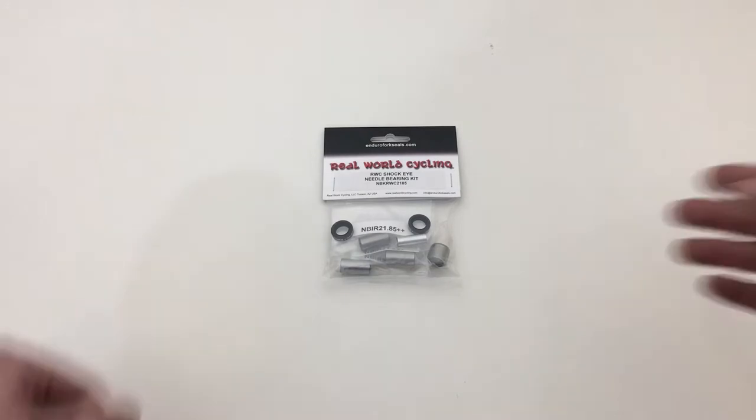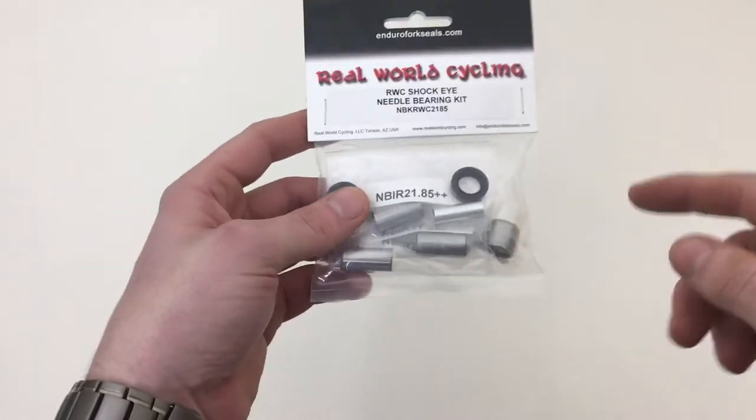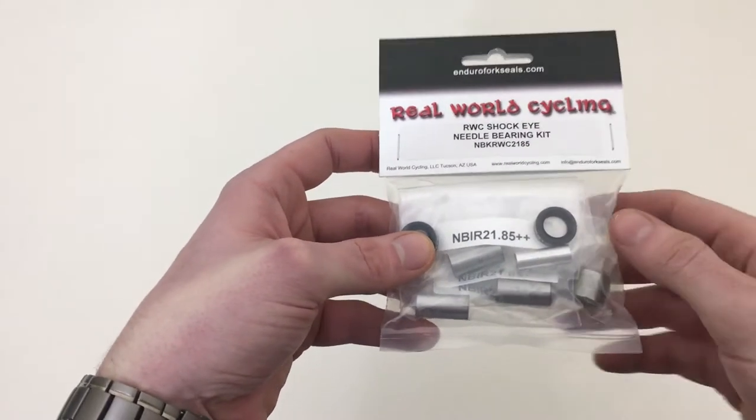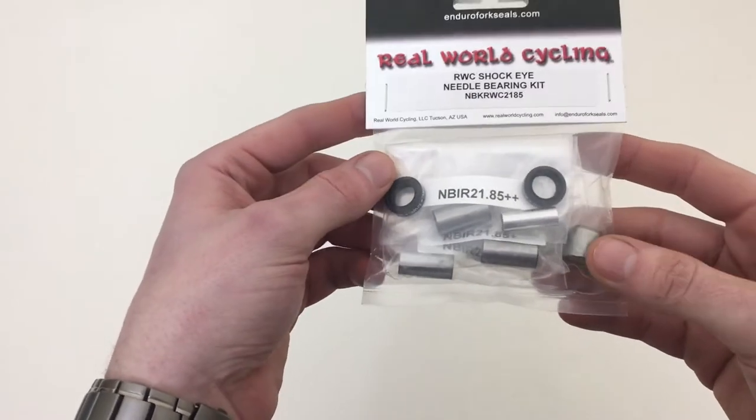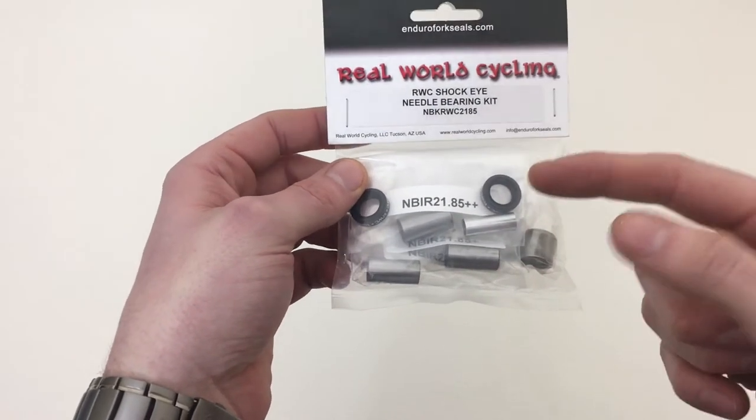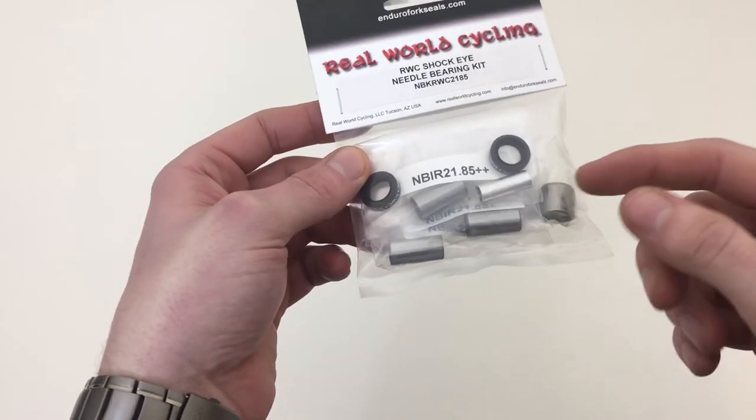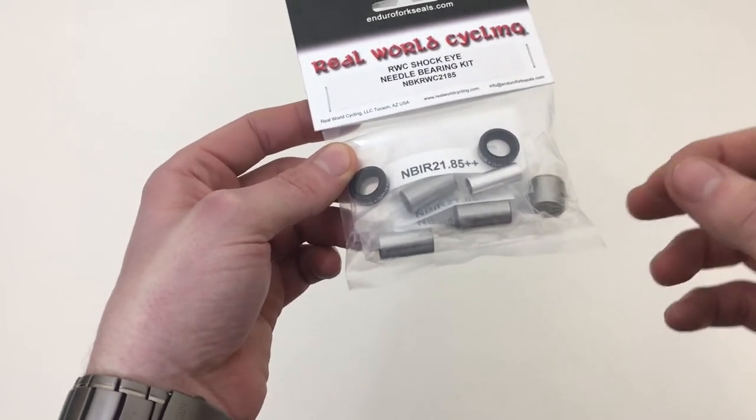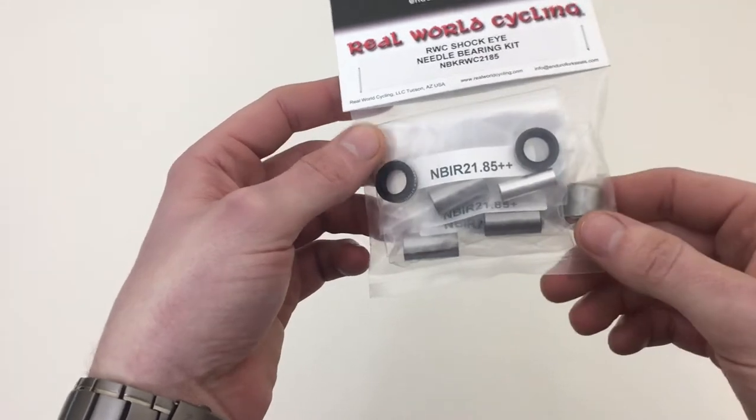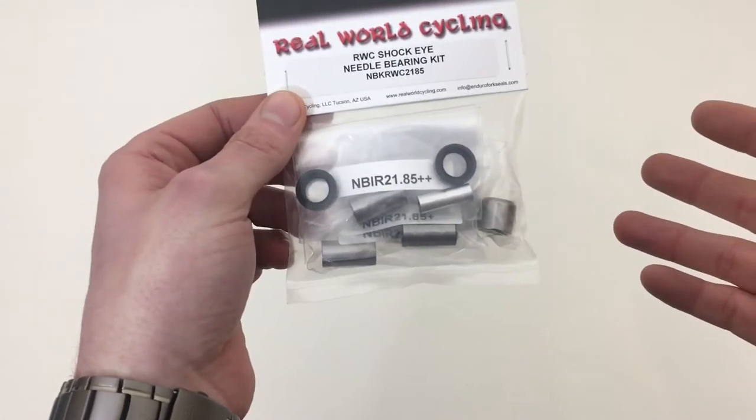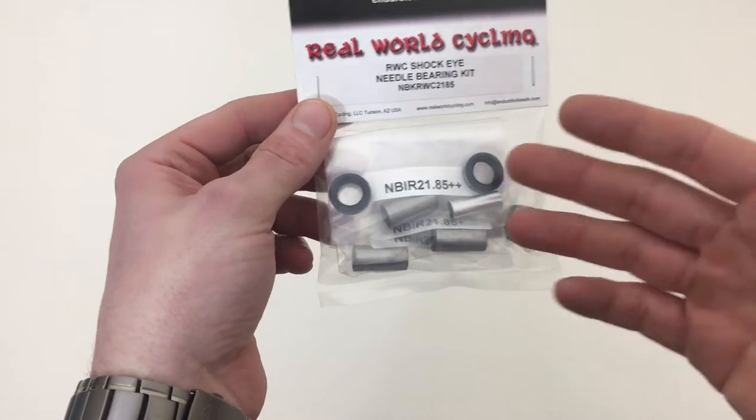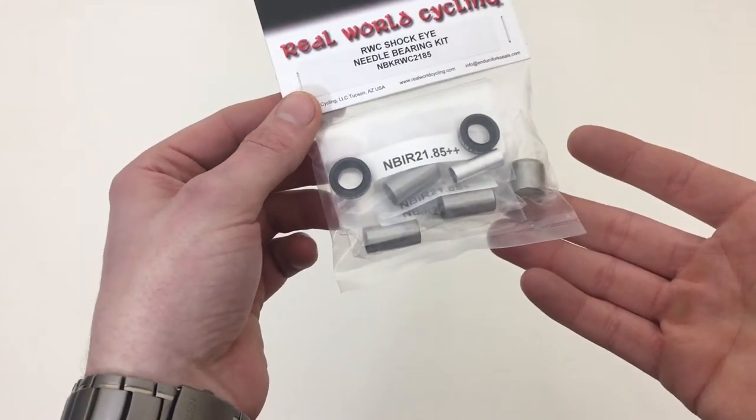Let's take a look at this kit. First off, I wanted to say that Real World Cycling makes this system for various different shocks and frames. All you need to do is find out what kit you need for your particular shock and frame. I'll be leaving a link in the description to their website and it has a chart on there with all the various manufacturers and then it tells you what size you'll need for your particular setup.